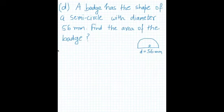Part D says a badge has the shape of a semicircle with diameter 56 millimeters. As you can see on the diagram, rough sketch, this is a semicircle. The diameter is 56 millimeters from here to here. Find the area of the badge. The solution for this: because we already know the diameter, so we can calculate the radius.